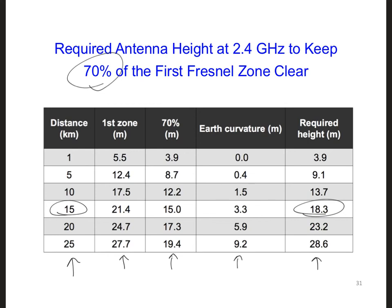So looking at this table, we can see that by accounting for the Earth's curvature, we've already raised our antennas up to be high enough for a 15 kilometer link. As a result, we don't need to worry too much about the reflection from the ocean surface.